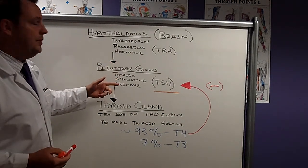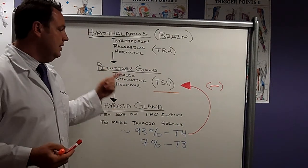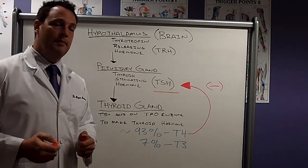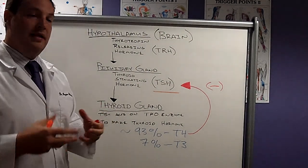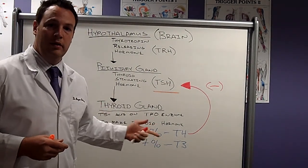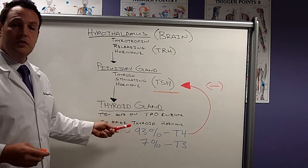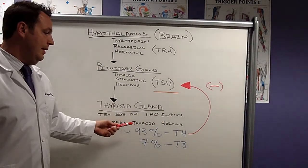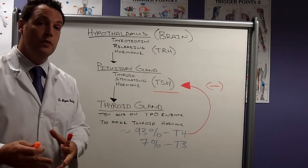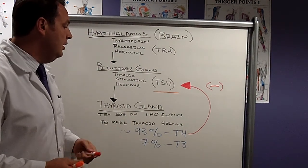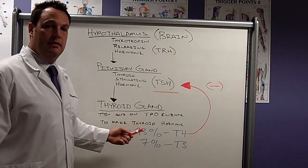Now TSH is released by the pituitary gland and then acts on the thyroid gland itself to activate thyroid peroxidase enzyme. This enzyme is the enzyme that puts together iodine and tyrosine to make T4 and T3. Most of the time it produces about 93% of what the thyroid gland produces as T4. This is total T4, or protein bound. That's why it's hugely important to check this on lab work.